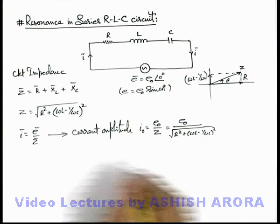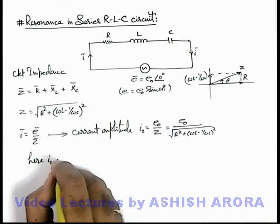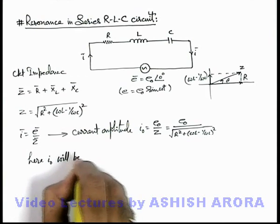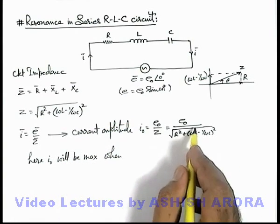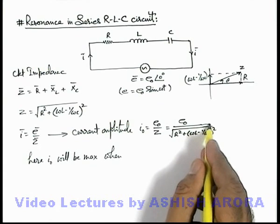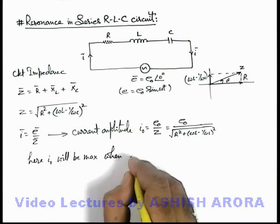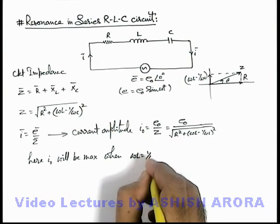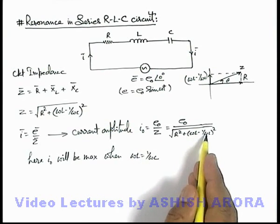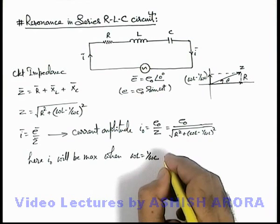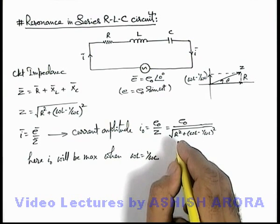Here we can see that I₀ will be maximum when the denominator in this term will be minimum. This will be minimized when ωL is equal to 1/ωC. When these two nullify the effect of each other, the value of current will be E₀ divided by R.